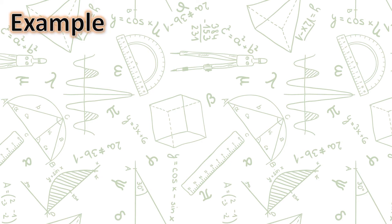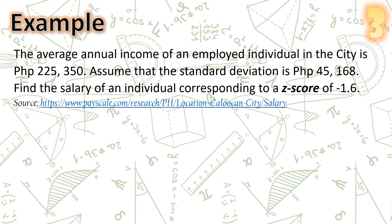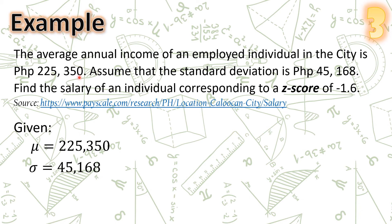Example number three: the average annual income of an employed individual in the city is P225,350. Assume that the standard deviation is P45,168. Find the salary of an individual corresponding to a z-score of negative 1.6. Given: mean = P225,350 and standard deviation = P45,168.